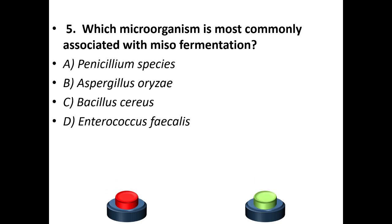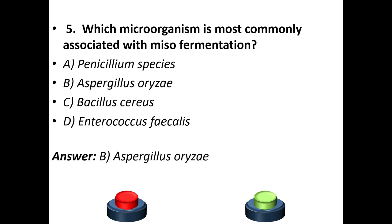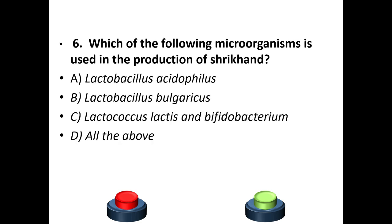Fifth question: which microorganism is most commonly associated with miso fermentation? A: Penicillium species. B: Aspergillus oryzae. C: Bacillus cerevisiae. D: Enterococcus species. Your answer is option B — Aspergillus oryzae.